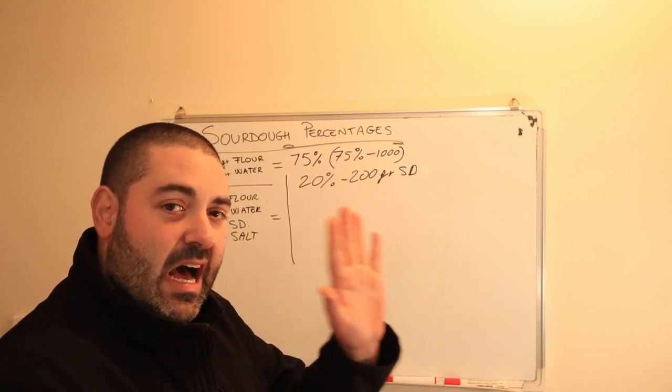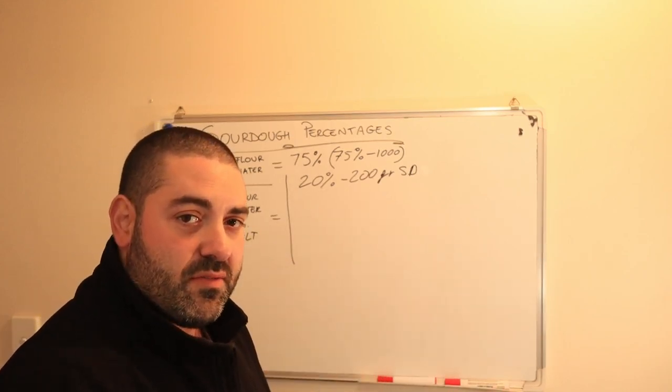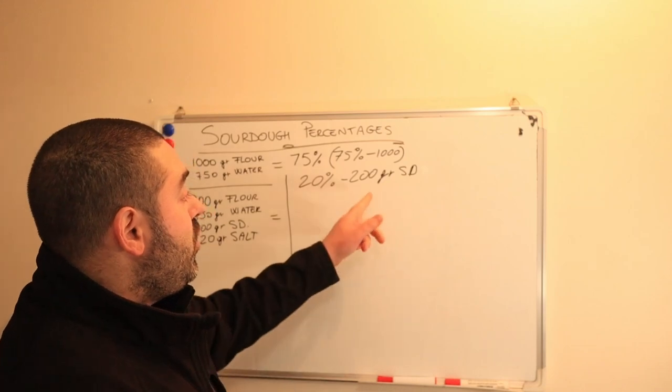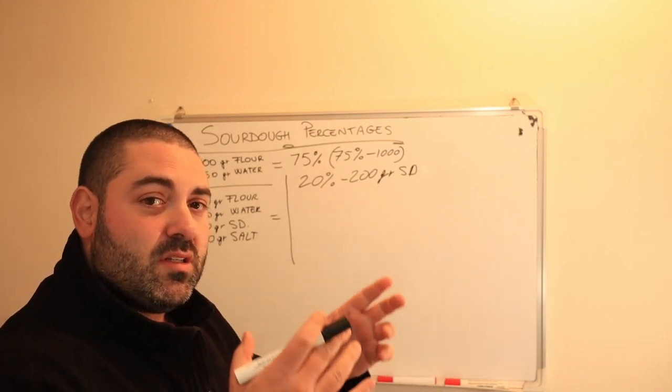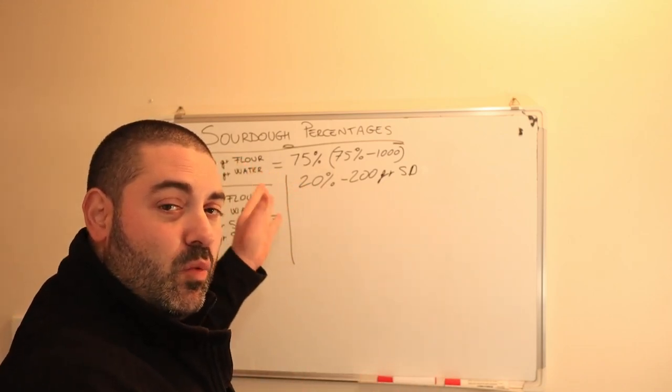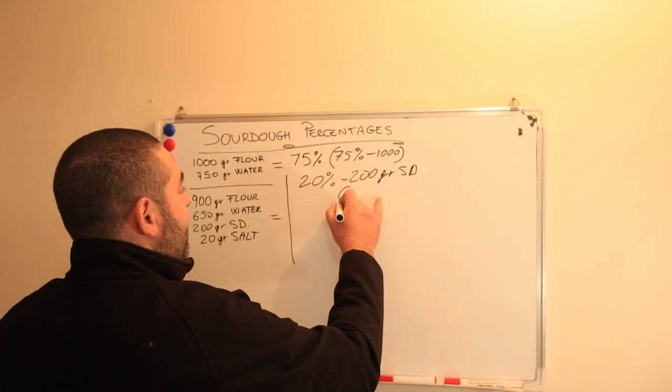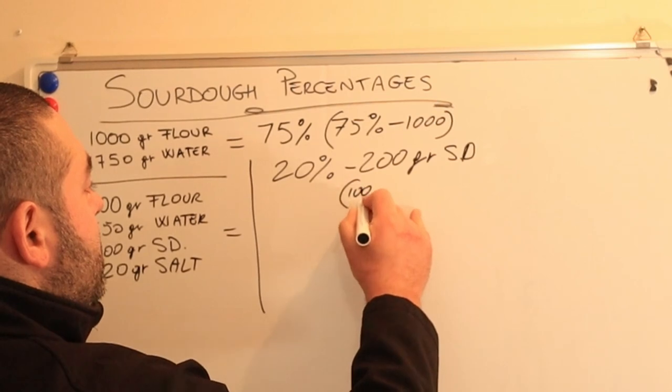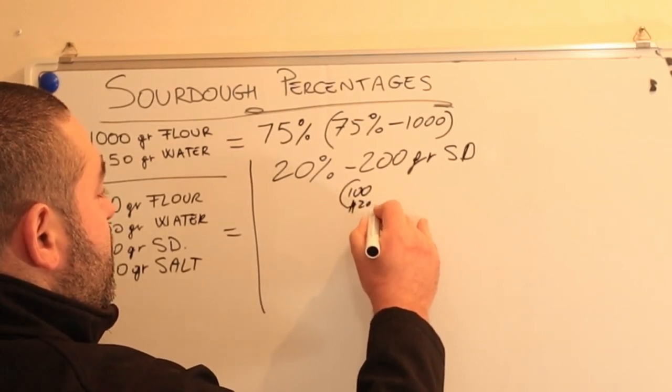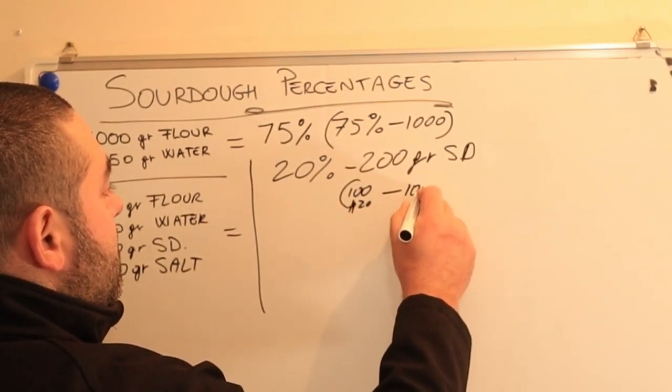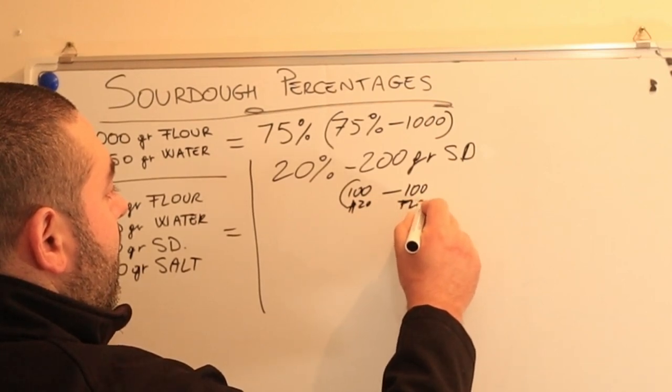You will need to remove this amount from the water and the flour. In this case we have, this one is divided into 100 grams of water and 100 grams of flour. Okay?